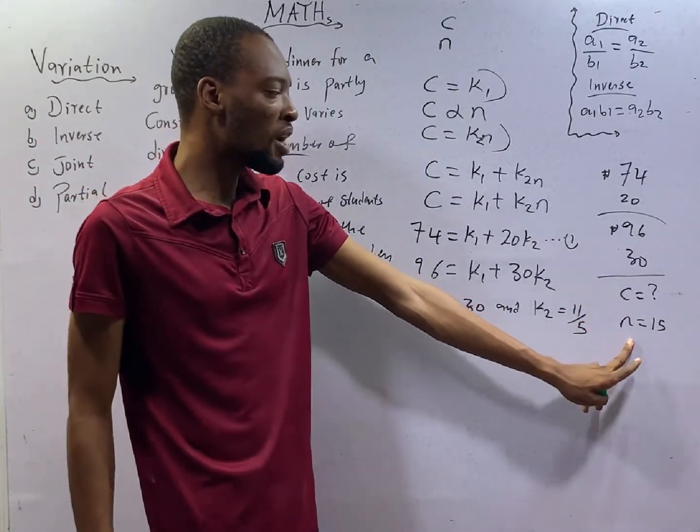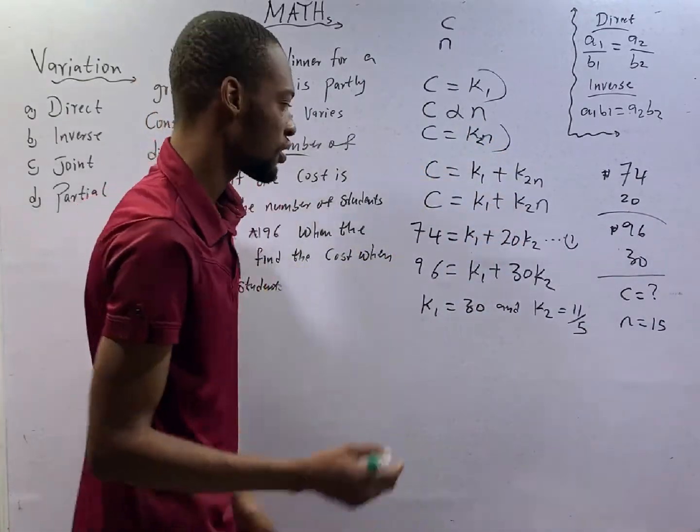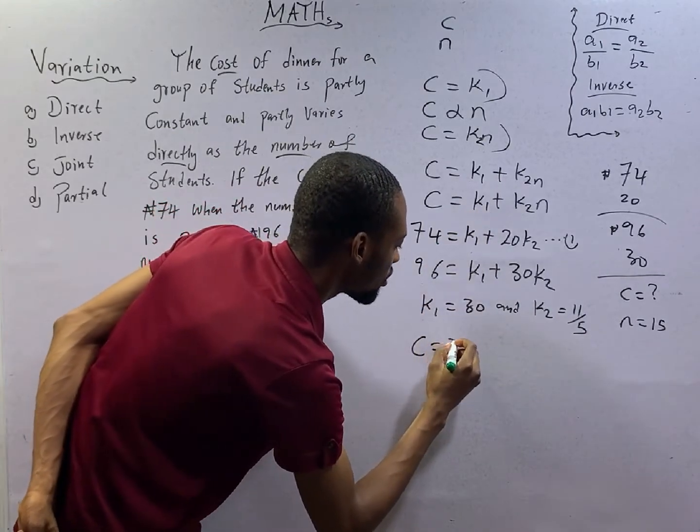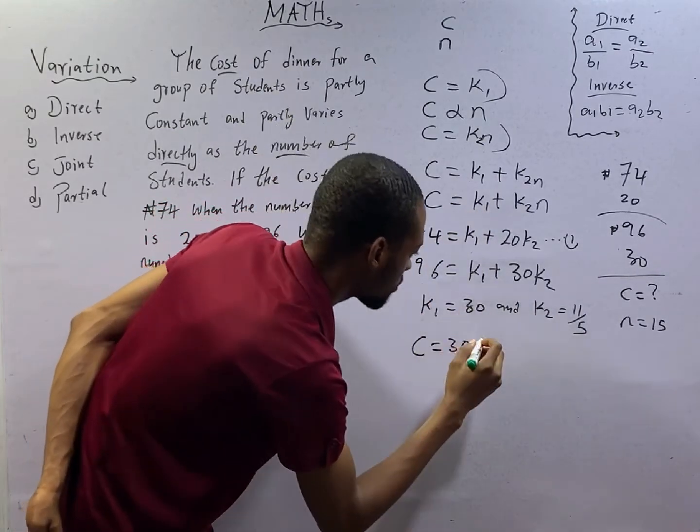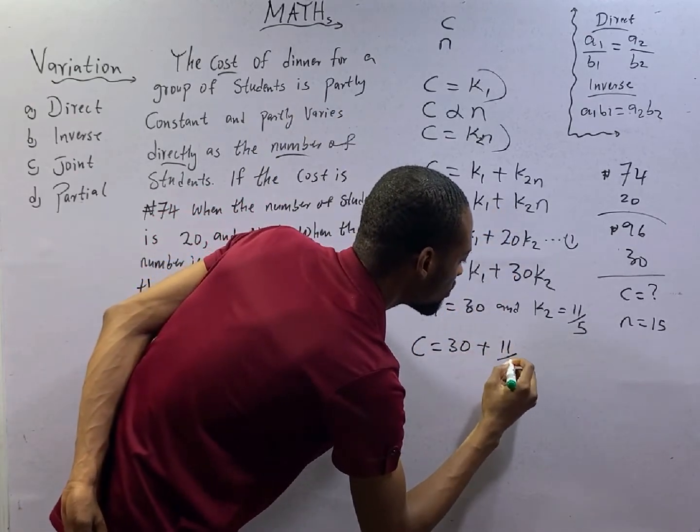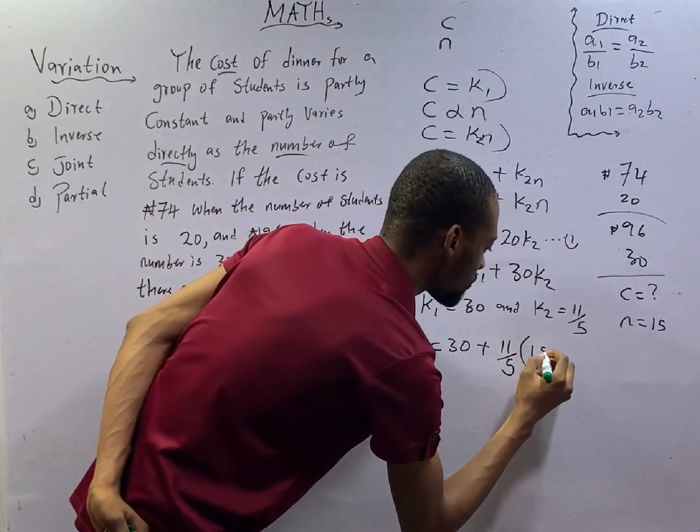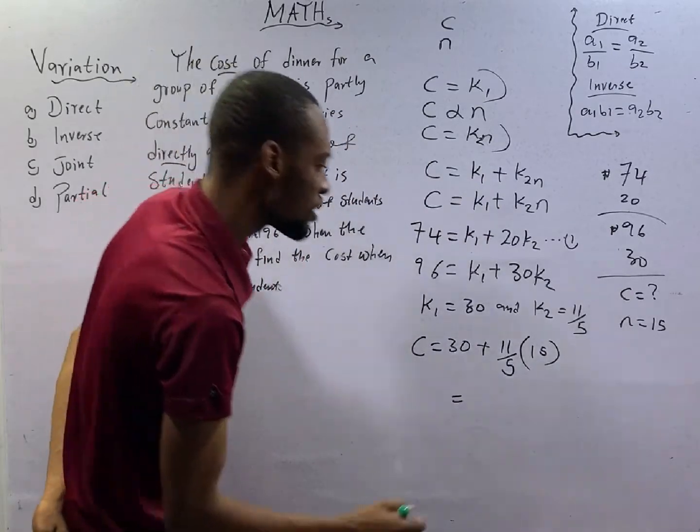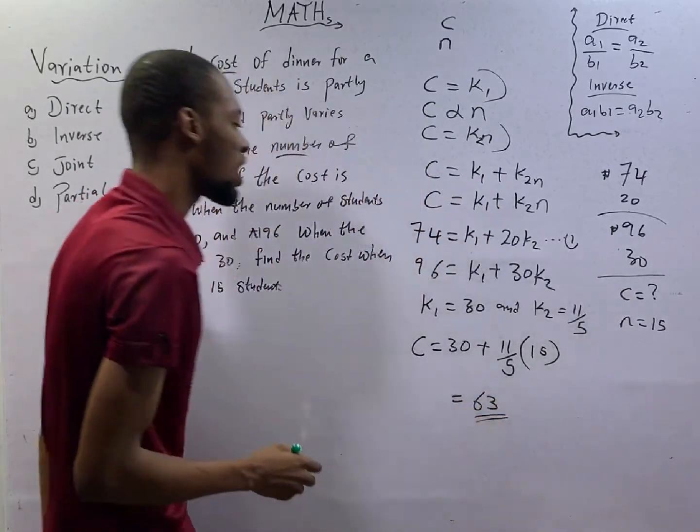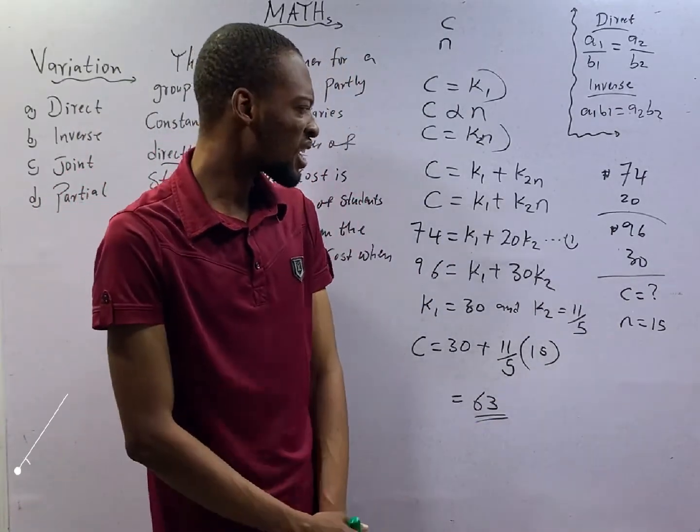If this is so, we are looking for cost when number of students is 15. You pick out any of the equations. C equals K1, that is 30, plus K2, 11 over 5, times the number of students, 15. If substituted correctly, this will give you 63. So the cost is 63. And this is how you answer questions under partial variation.